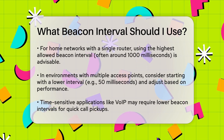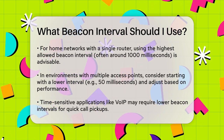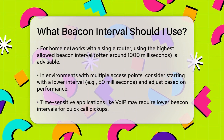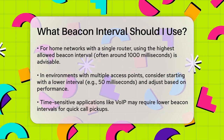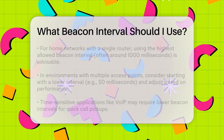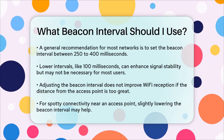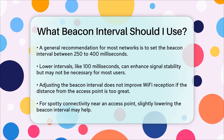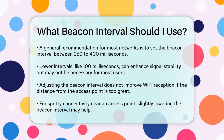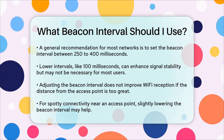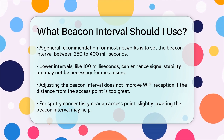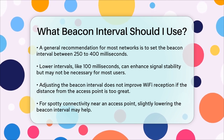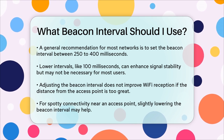General guidelines: for most deployments, a beacon interval between 250 to 400 milliseconds is recommended. This balance helps maintain signal stability without overly draining battery life. If you need high signal stability and accurate indoor positioning, a lower interval like 100 milliseconds might be considered, but it's generally not necessary and can be wasteful.